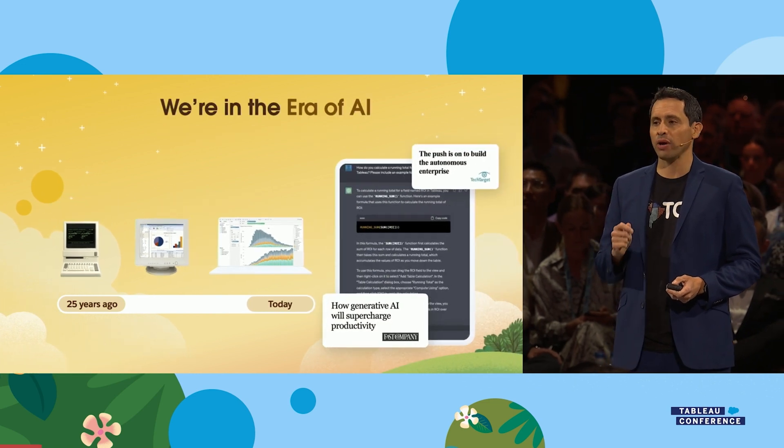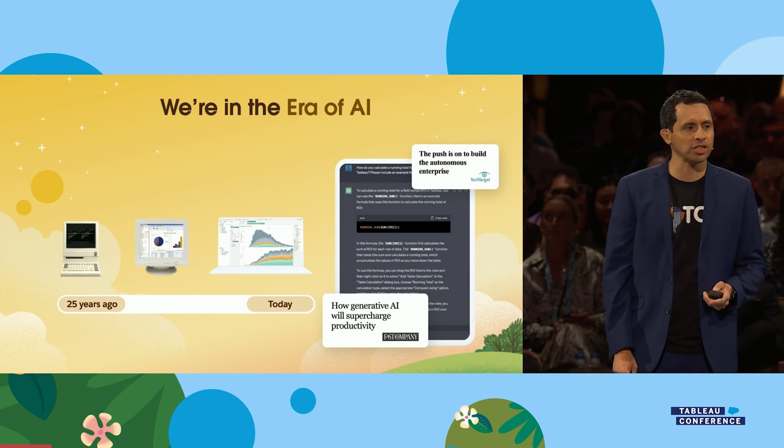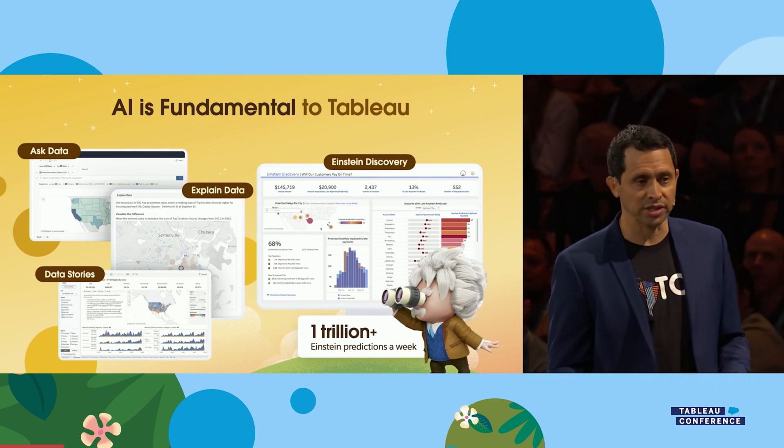Tableau had to talk about AI at this conference — AI has mothballed the entire technology industry. While everyone is still scrabbling to figure out where it's useful, they still had to talk about it. The section was split into two parts: first, how Tableau is already using AI. There have been investments over the last few years — Ask Data, Data Stories, Explain Data, and of course Salesforce had Einstein. ChatGPT made AI a colloquial term that everyone now pays attention to, but Tableau made clear they're not just jumping on the bandwagon — they've been part of this train for some time.